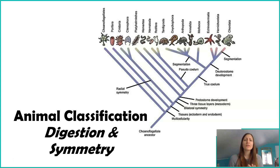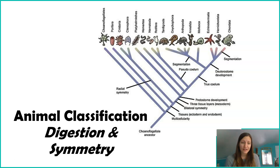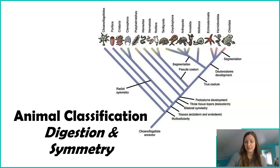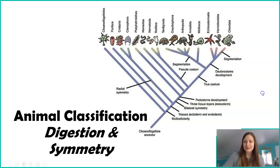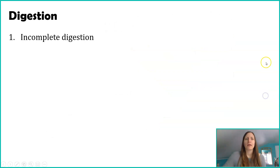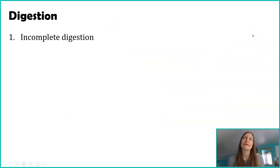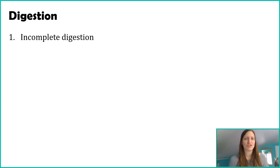This first video on animal classification is going to explore digestion, as well as symmetry. So let's start with digestion. In animals, we find two different strategies for digestion.